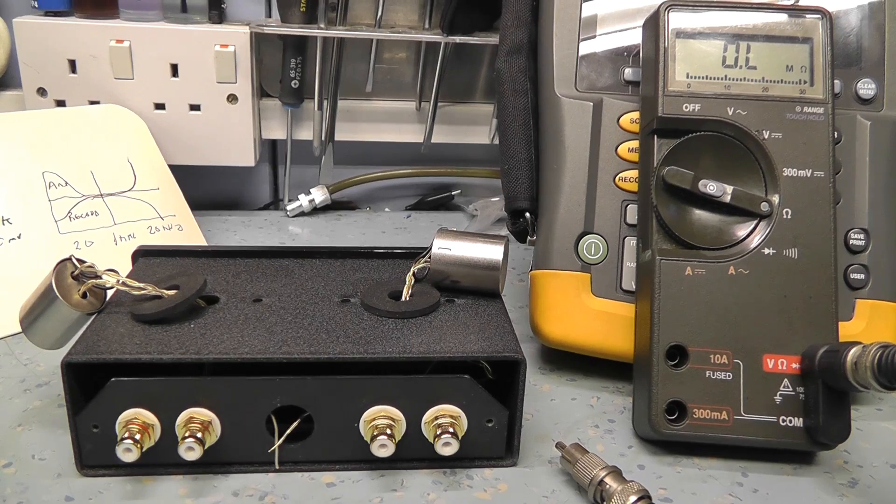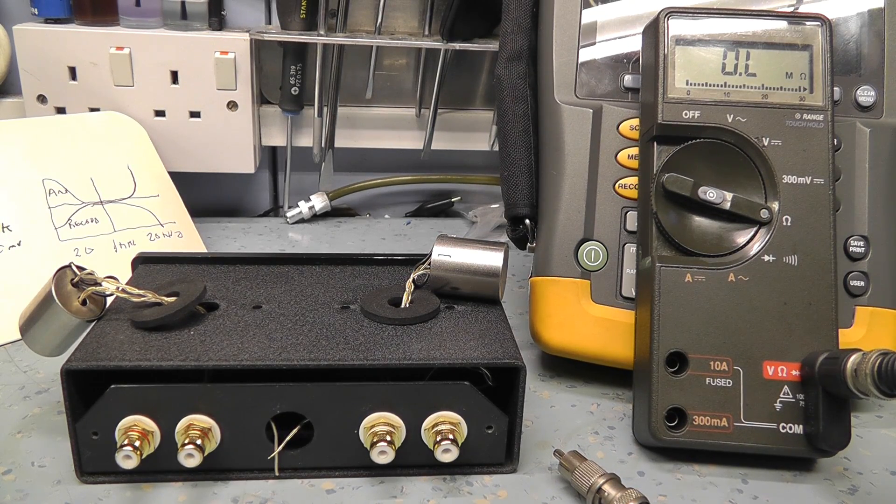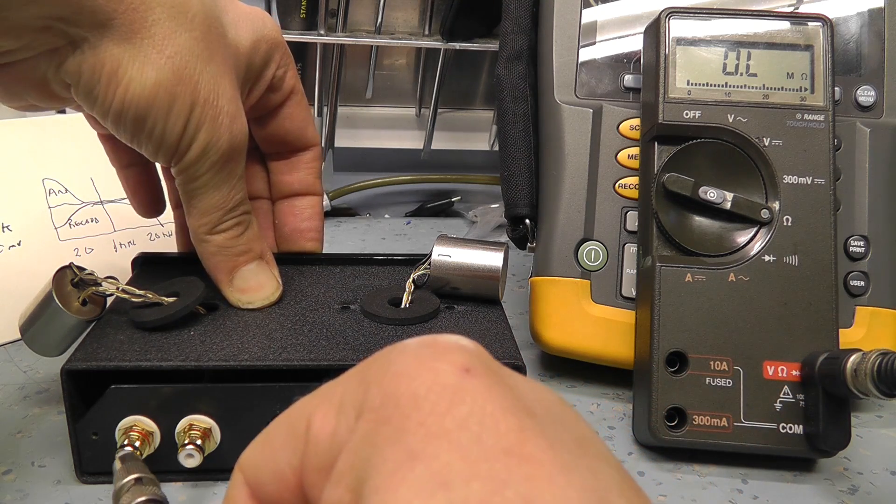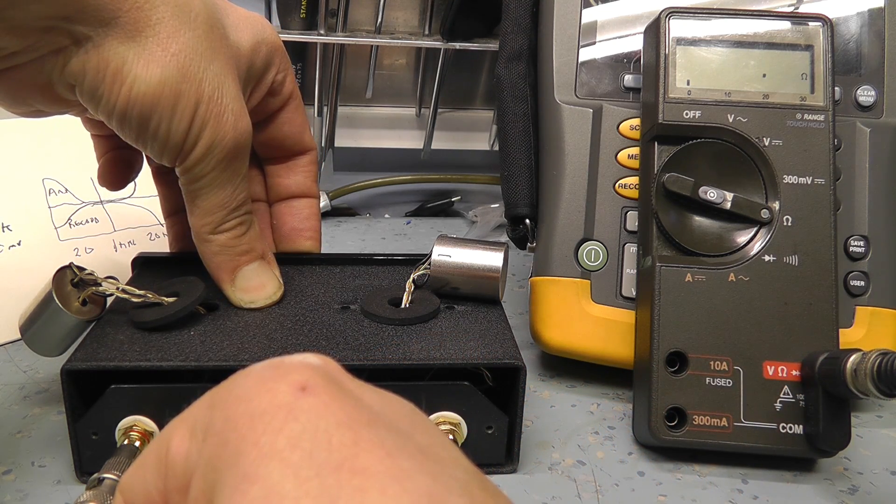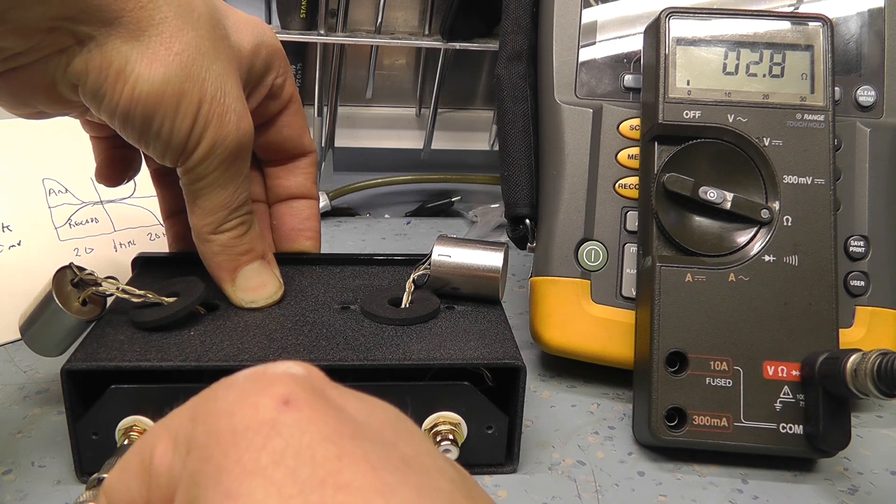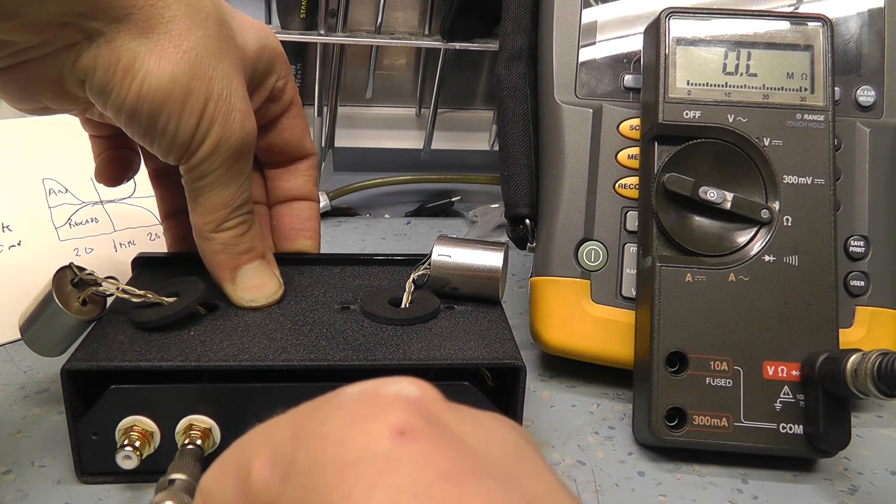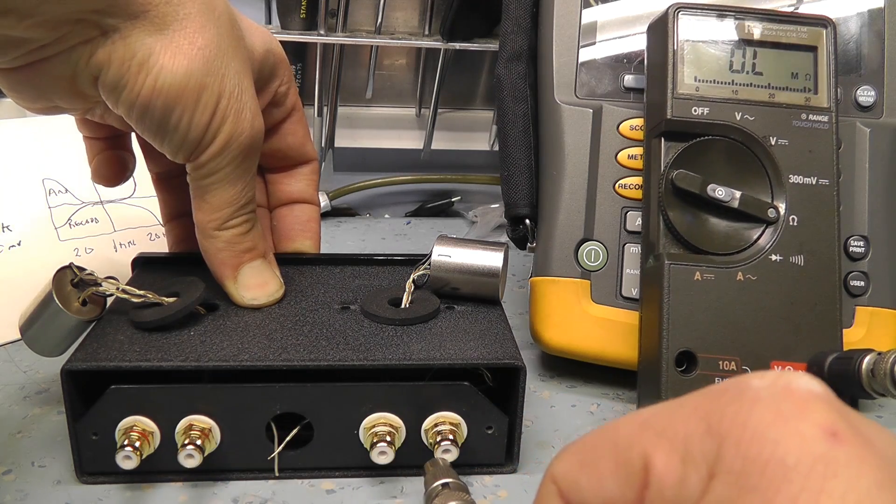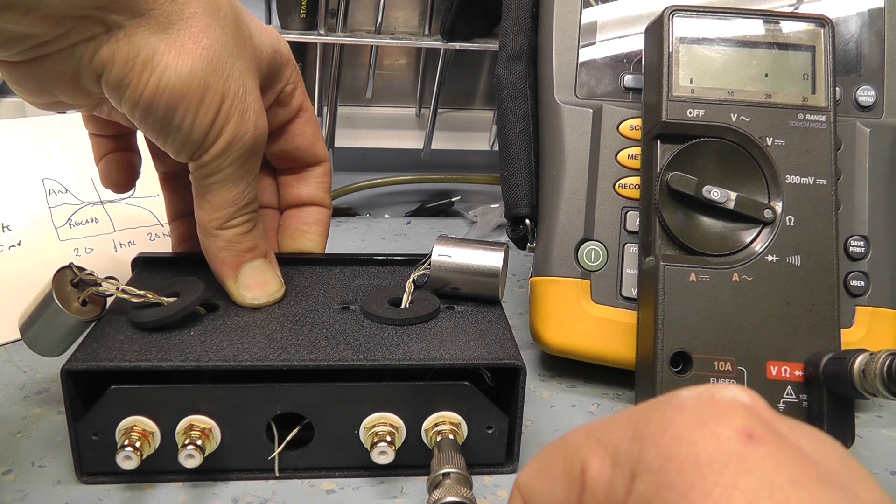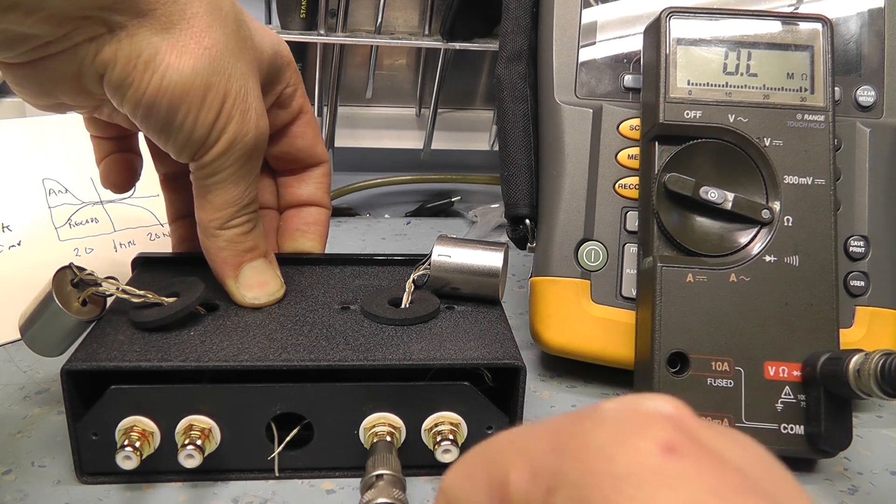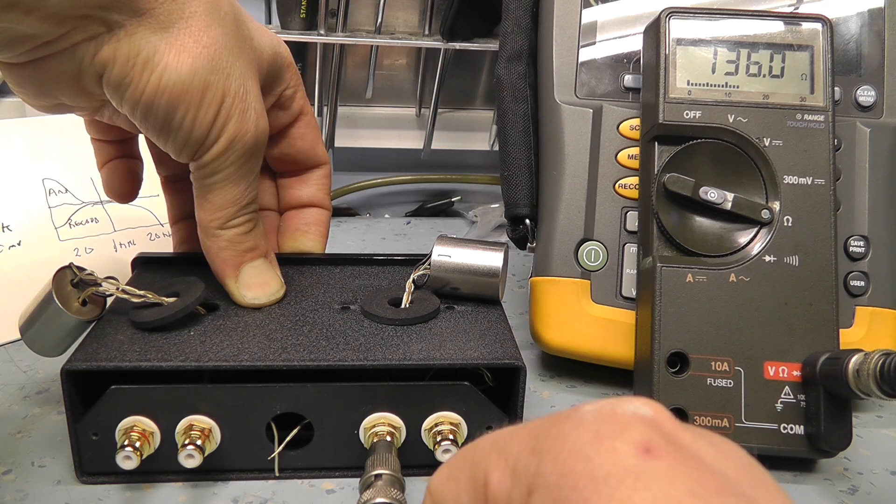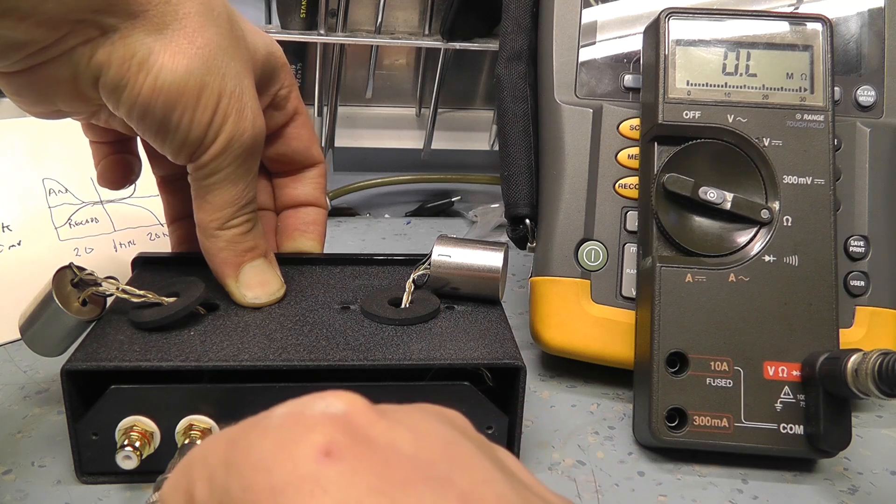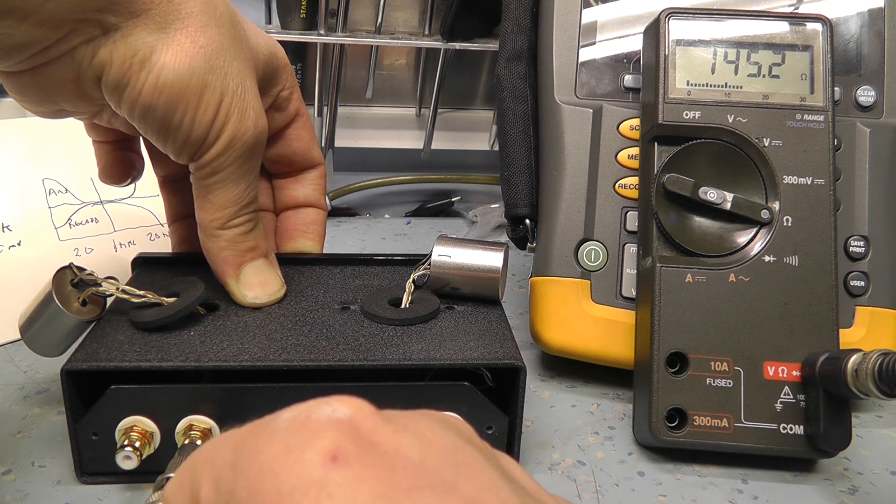Right. Let's try that. Re-soldered that wire on. It looked like the enamel hadn't been stripped off properly. So let's see if we get something a bit more sensible now. So we've got the right channel. It was working okay. So 3 ohms. 150. Left channel. 3 ohms. 136. So 136. 140.